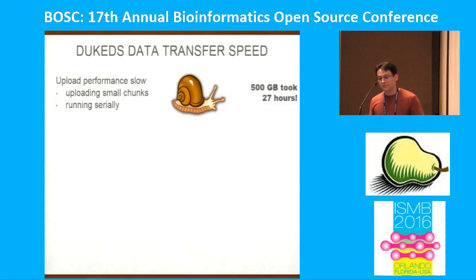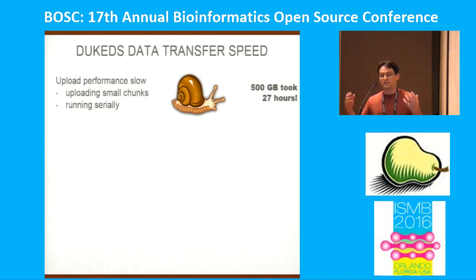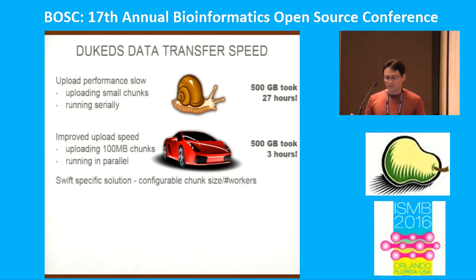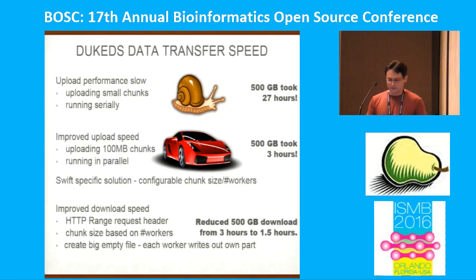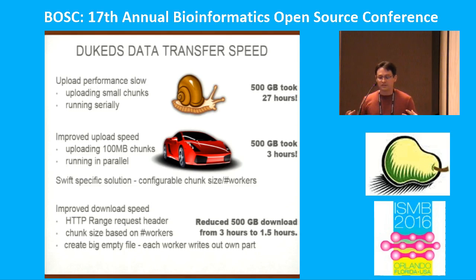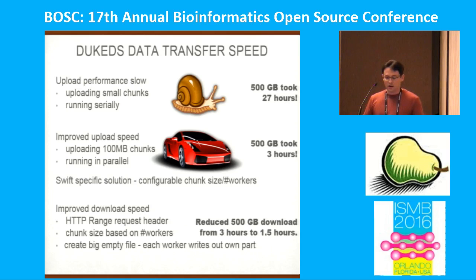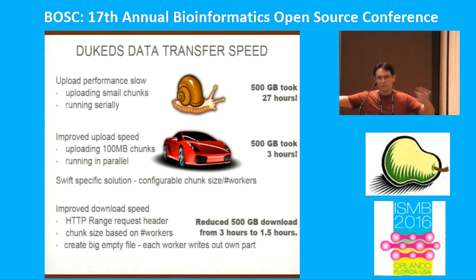The naive single-thread implementation was too slow. With a small chunk size, it would take over a day to upload 500 gigabytes. Using a larger chunk size and parallel uploading, we got it down to three hours. We also looked at download speed. We were able to use an HTTP range request header to split the URL into chunks. Determining chunk size based on content size and number of workers gave a better result. Also, creating a large empty file and having each worker write directly to its portion of the file at the same time also reduced download time.